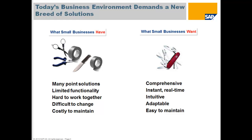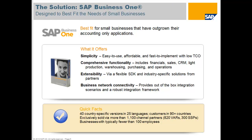The answer is to provide businesses with a new kind of solution. The traditional solutions have been many different point solutions with limited functionality that are hard to integrate, difficult to change, and costly to maintain. At SAP, we have more than 30,000 small businesses using SAP Business One, so we get a lot of feedback that goes into our product development. What the market tells us is that people want solutions that are comprehensive, give them instant real-time access to information, and are intuitive, adaptable, and easy to maintain. Our answer to that is SAP Business One.